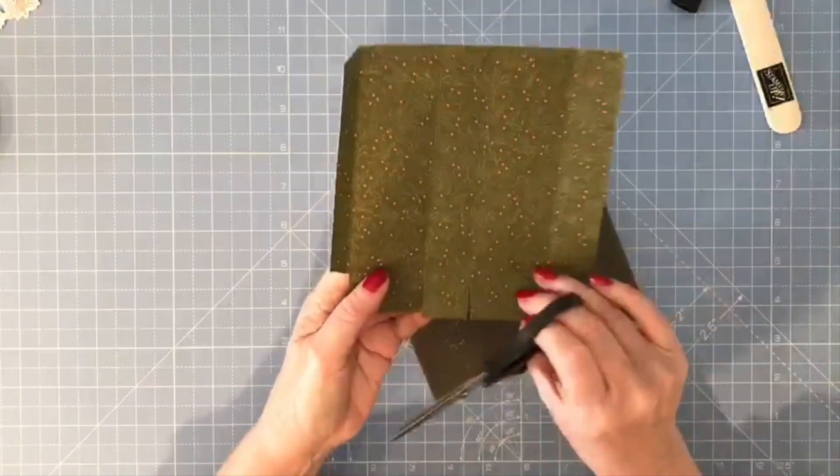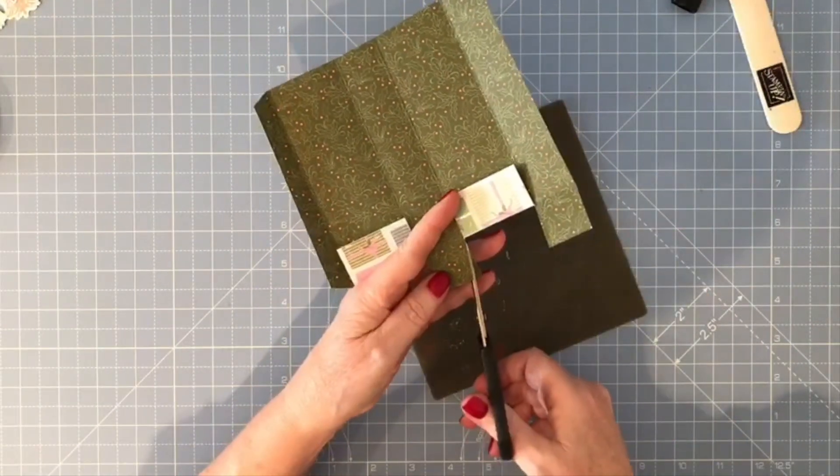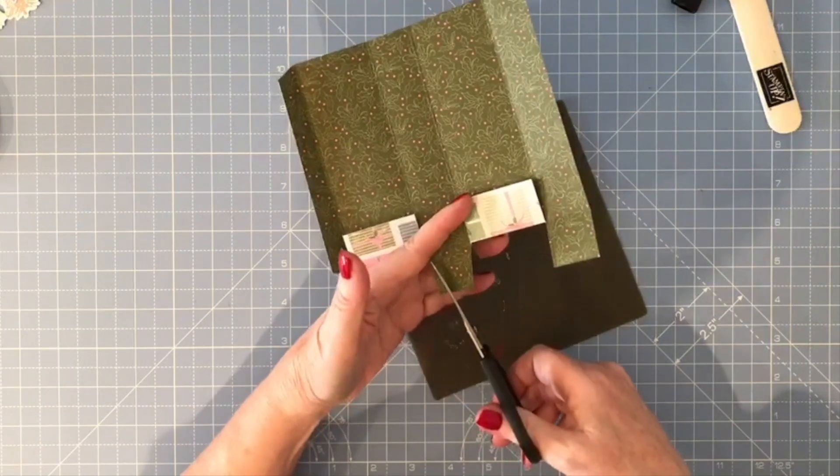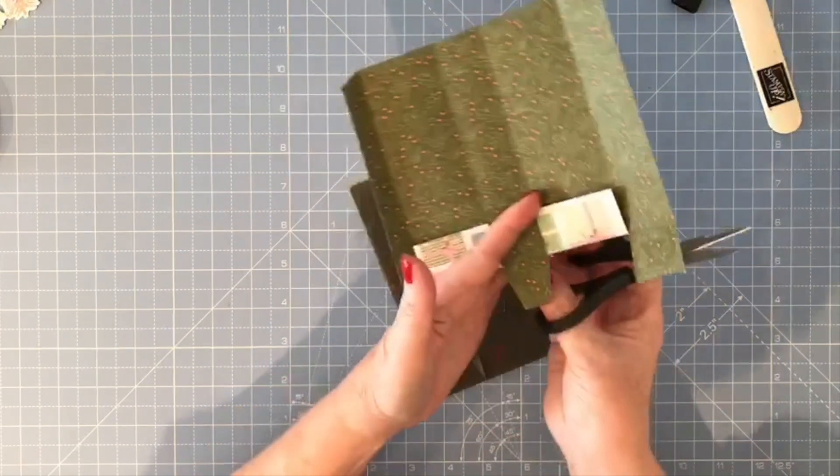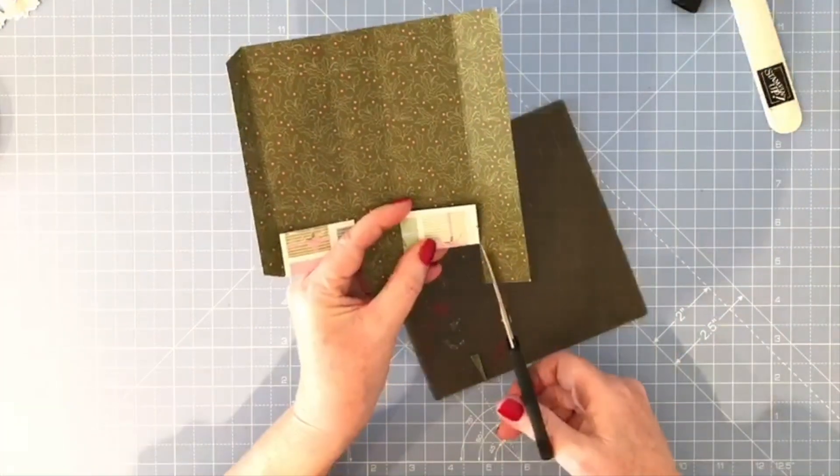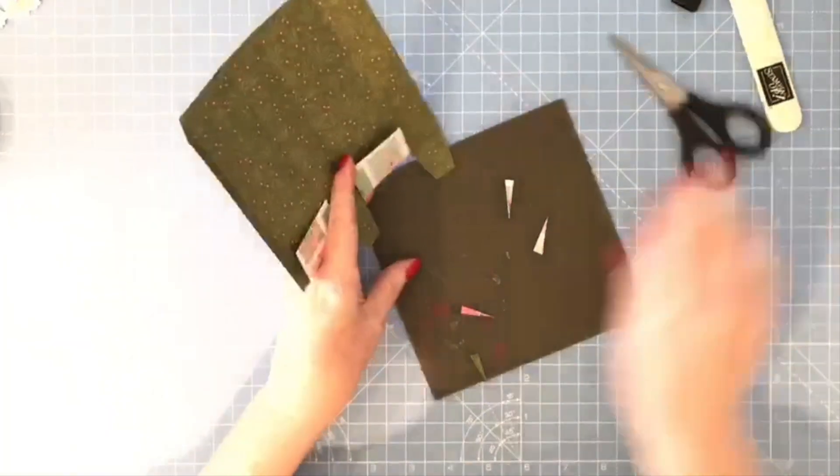I'm just going to fold the two rectangles out of the way and on the two square pieces I'm just going to mitre a section out. This is just to help the box go together a little bit easier.